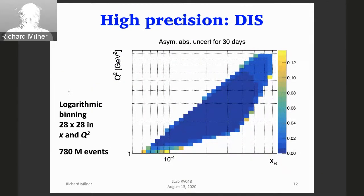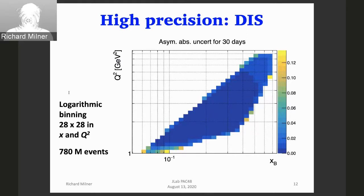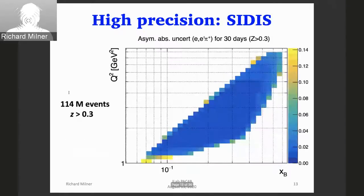We have made a logarithmic binning with 28 bins in x and 28 bins in Q². In 30 PAC days that gives 780 million DIS events. The previous best experiment was about 200 million inclusive events at SLAC. So the precision is unprecedented. With high precision inclusive, you also get a high rate of SIDIS events — with a Z cut of 0.3 and above, we get 114 million events.